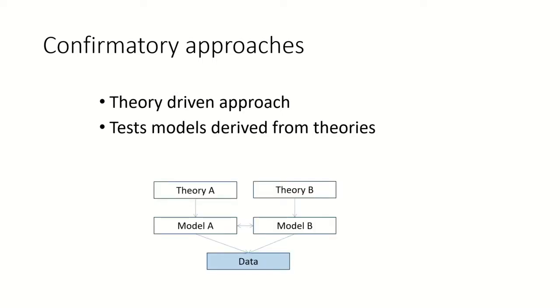So you could think of, if we have a theory A, we need to create a model that would capture the important aspects. And we may also have an alternative theory B that we can also operationalize. So we can develop a testable model. And now what we need to do is we need to gather some data that can be used to test model A versus model B to give us some kind of information about whether theory A or theory B is more appropriate to account for the data that we have.